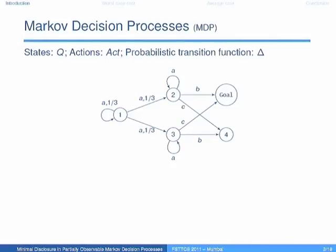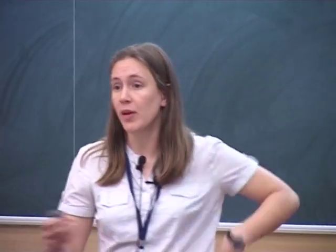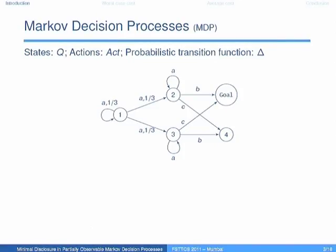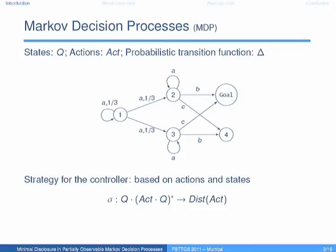Let's explain what the model is. We start with Markov decision processes: a model where you have one player responsible for making non-deterministic choices. For example, in state one there is action A available, so the player can choose action A. Action B could be thought of as going to some losing state. After that, nature or a random player chooses the successor according to probability — with probability one third the successor is one, and with the same probability it can be state two or three. A strategy for the controller is based on the actions and states visited.